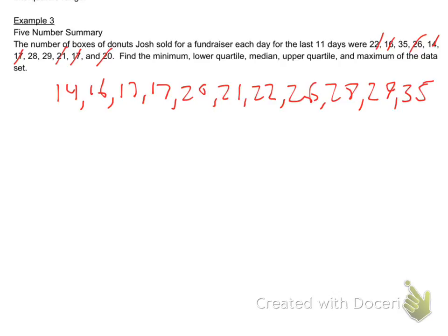Now that we have them in order, let's start listing things. Like, 14. 14 is the minimum. 35 then is the maximum. Those are two easy ones.